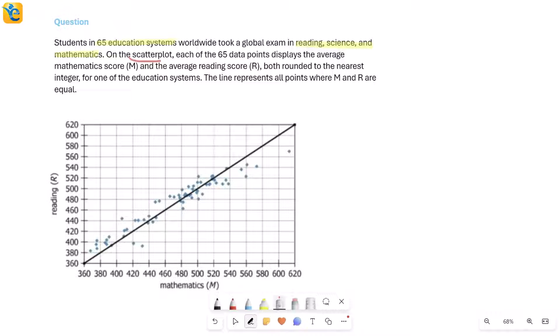Now on this scatter plot that is given here to you, each of the 65 data points displays average mathematics score (average math score, which is your M) and average reading score (R), both rounded to the nearest integer for one of the education systems. What does this mean?